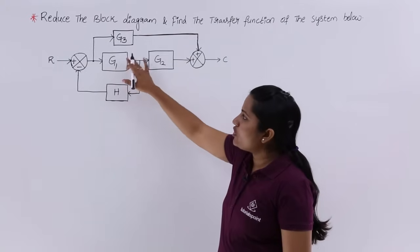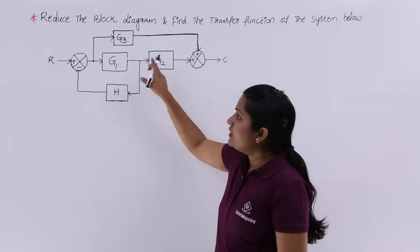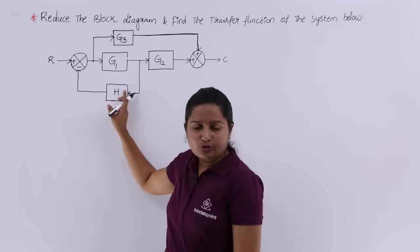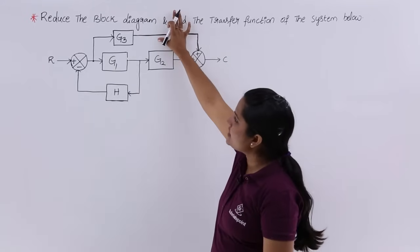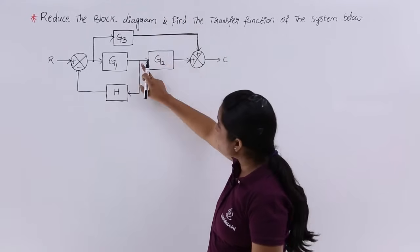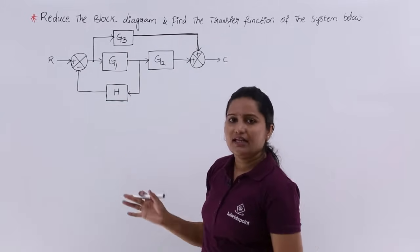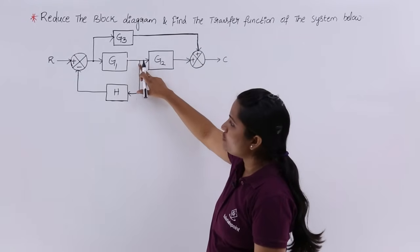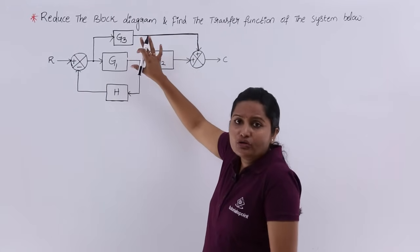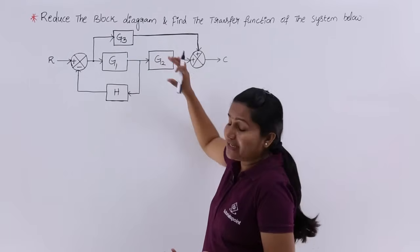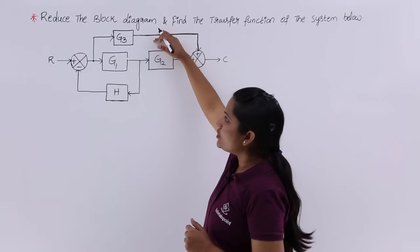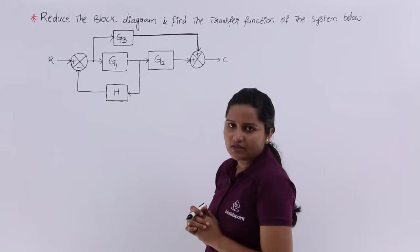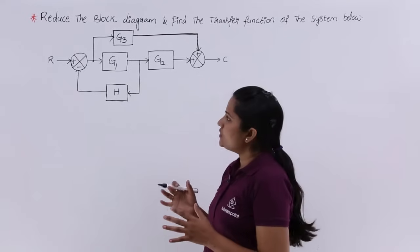We need to decide which part to reduce first. If we want to reduce the series path, that series element is within a feedback loop, so we can't do that first. If we want to reduce the parallel elements — G1 plus G2 plus G3 — there is a disturbance due to the feedback path. Because of this feedback path, we don't know the effect on the gains, so we can't do the parallel block reduction first either.